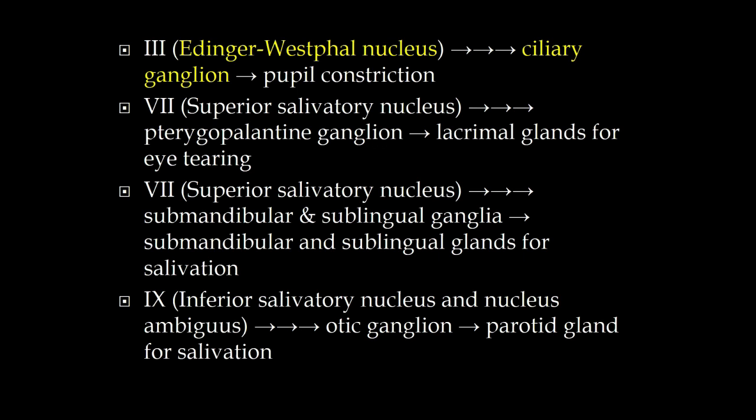Tearing and salivary gland function are parasympathetic functions going with cranial nerve seven. The preganglionic nucleus is the superior salivatory nucleus, and this goes out through specific named ganglia — either to the eyes for tearing or to the submandibular and sublingual glands for salivation. For the parotid gland, this comes from cranial nerve nine; the preganglionic neurons are in the inferior salivatory nucleus, going out to the otic ganglion and then to the parotid gland.